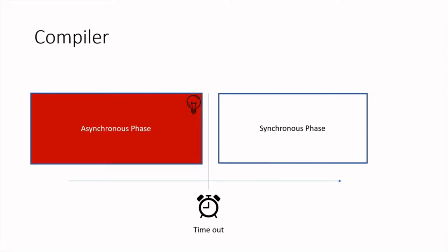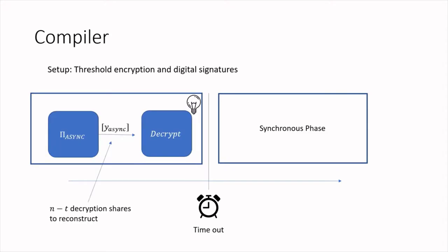How does the asynchronous phase look? The asynchronous phase has two sub-protocols. The first sub-protocol runs an asynchronous protocol that outputs an encrypted version of the correct output y_async — denoted y_async in square brackets. For this, parties use a threshold encryption scheme as a setup. To decrypt that output, the threshold is set to n-t. Then the decrypt box has the task of decrypting this ciphertext, and if it succeeds, the bulb turns on.